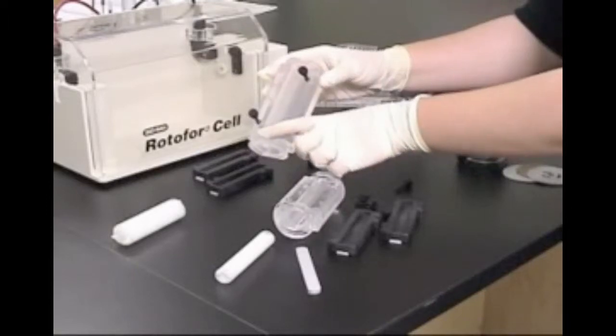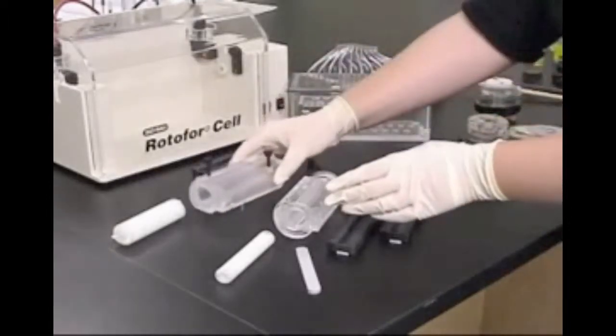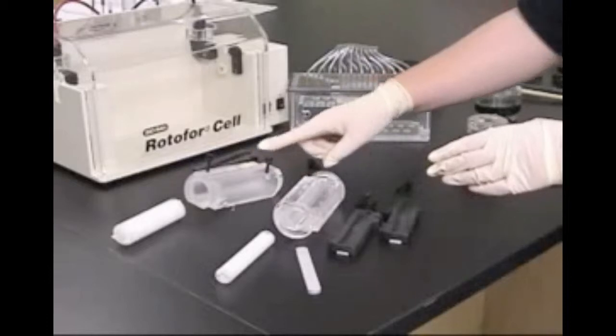Use the tape that is provided with the Rotofor to cover the harvesting ports. It is not necessary to cover the loading ports.